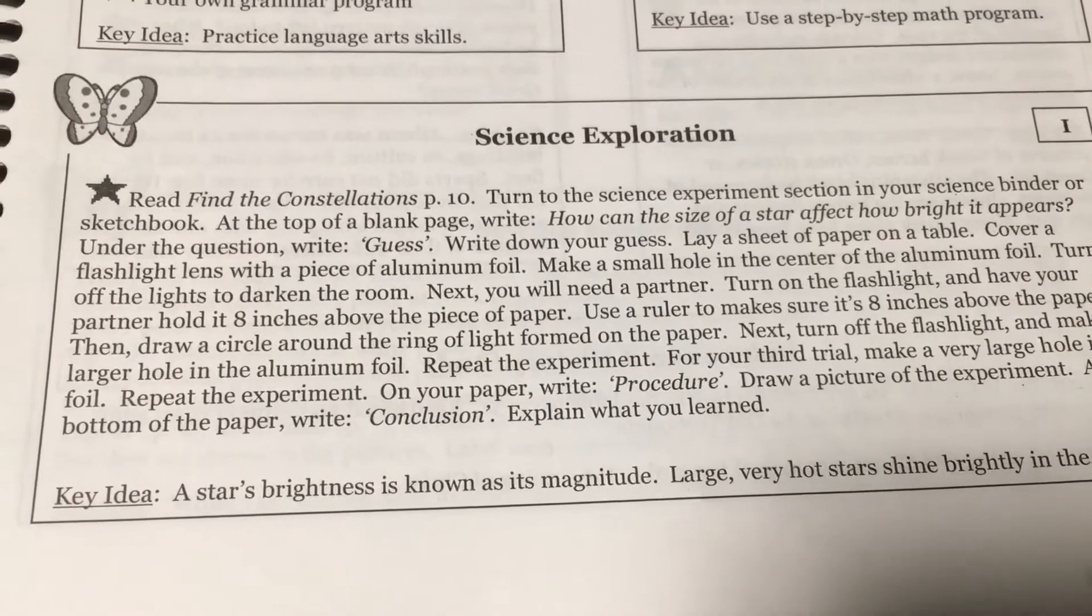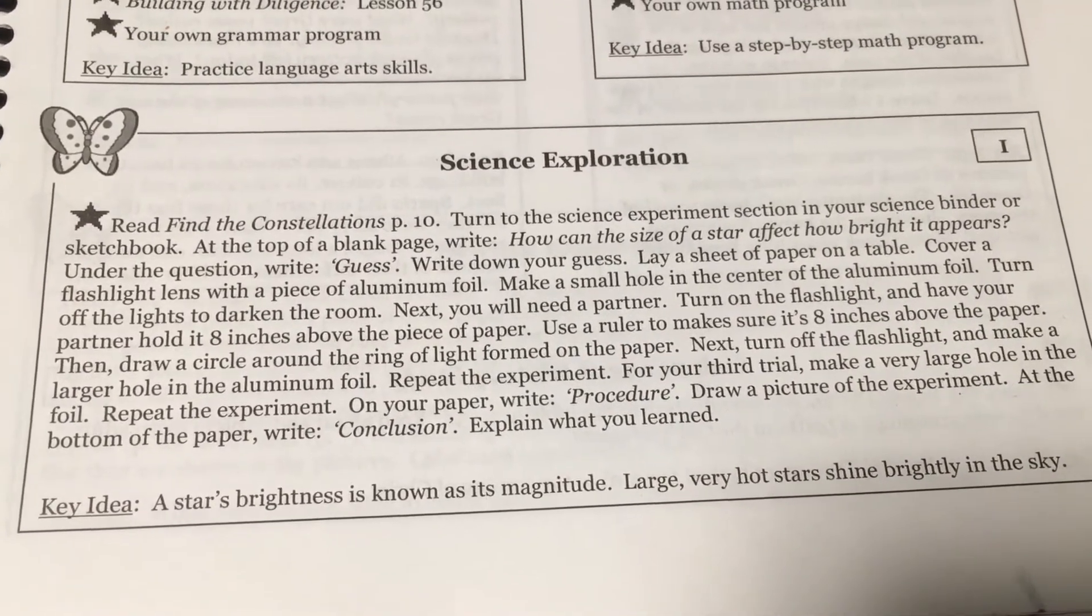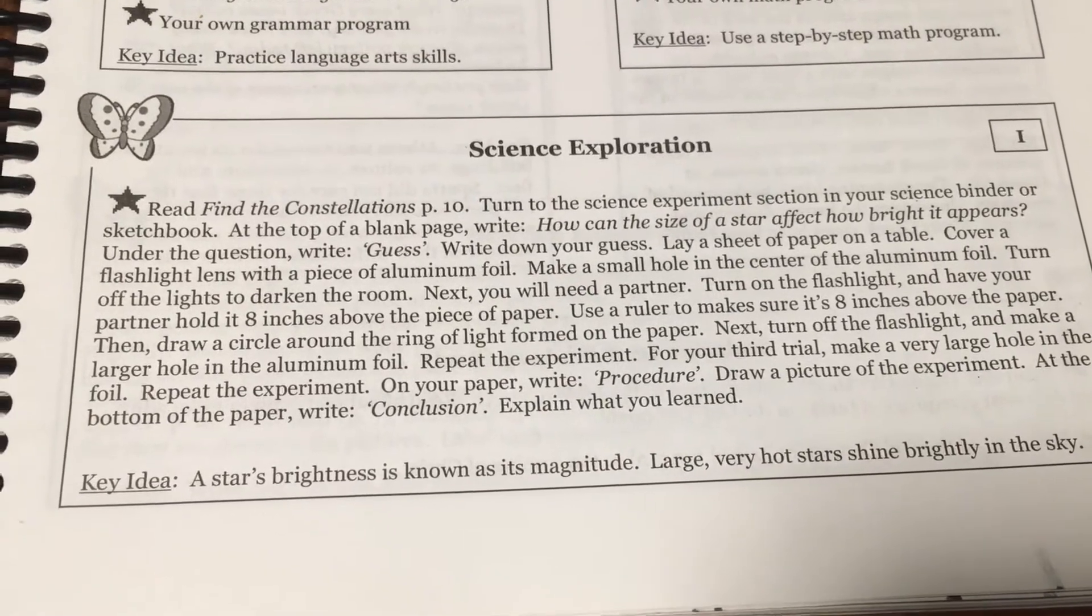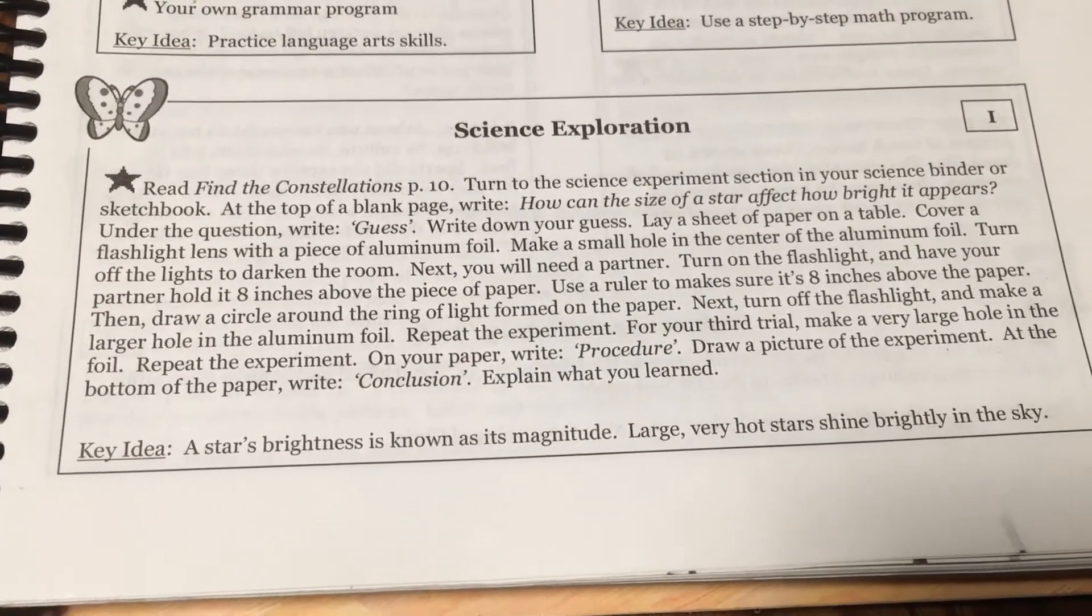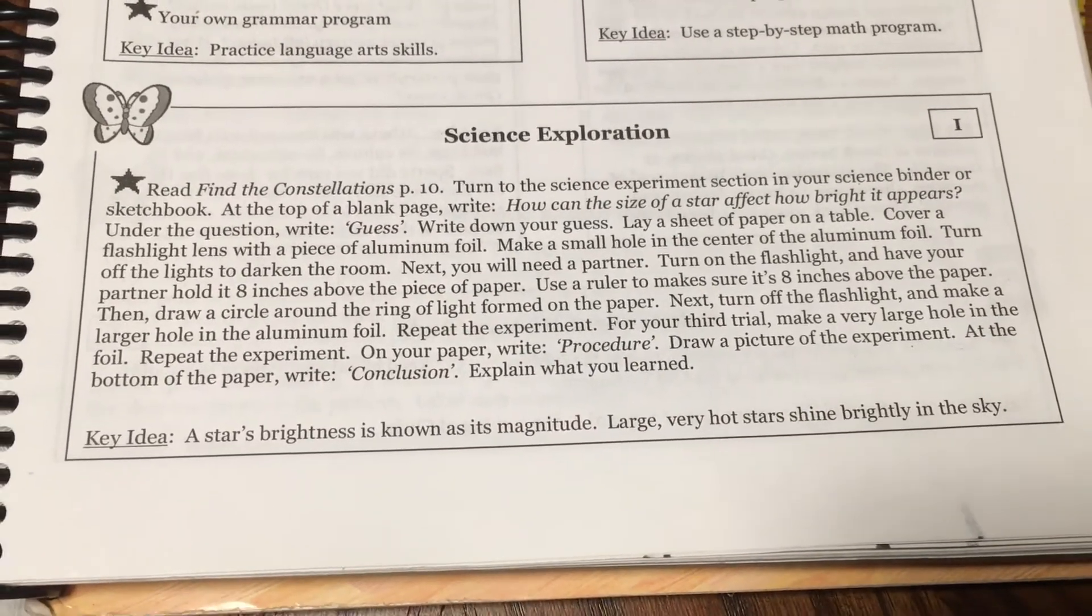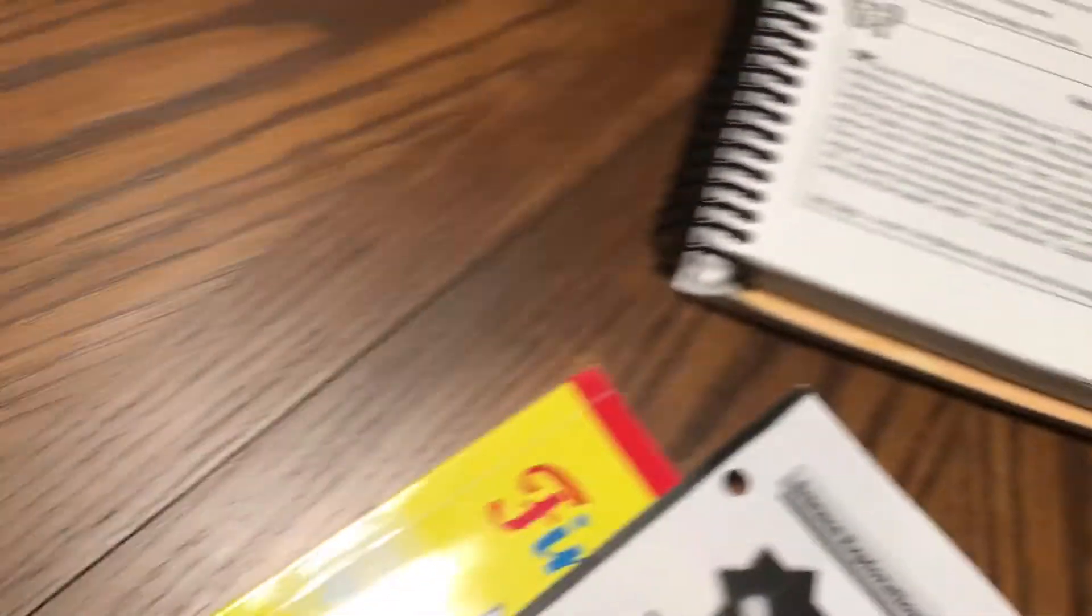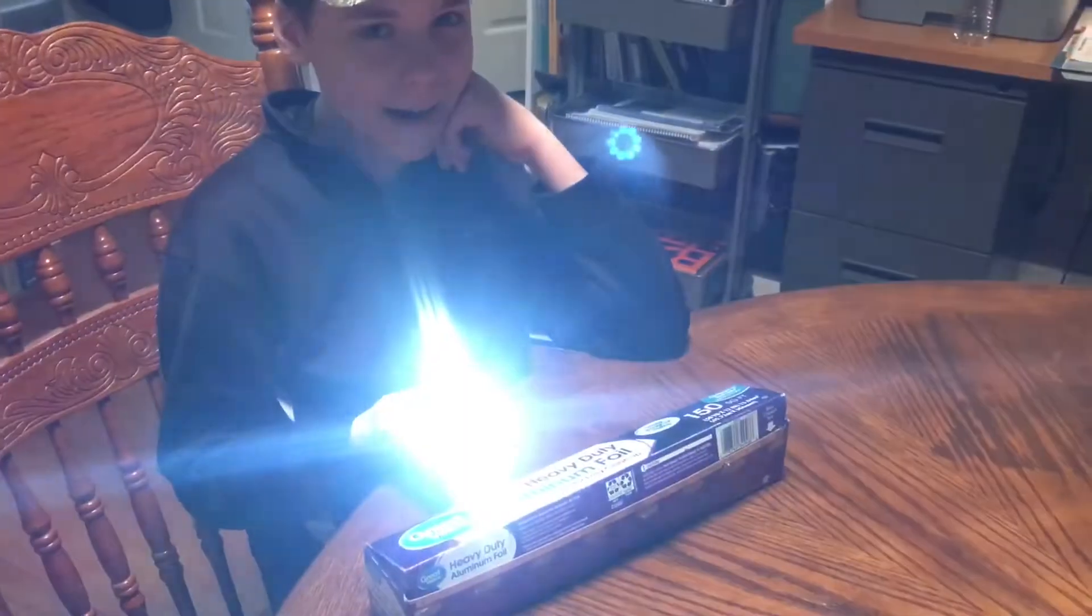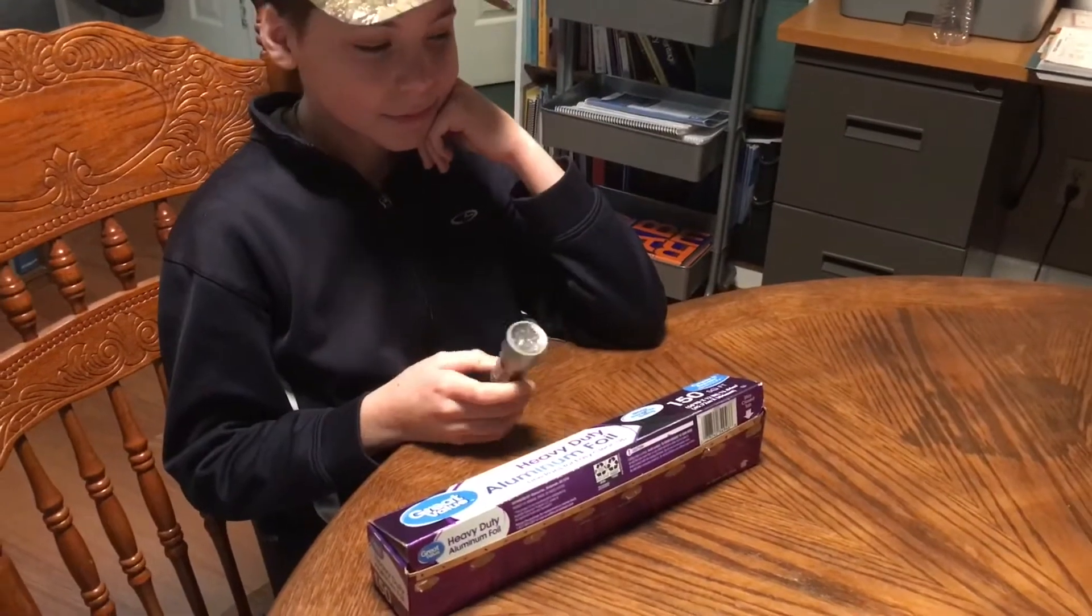So he's done his hypothesis. Now we have to get out what we need. We're going to need a sheet of paper. It says lay a sheet of paper on a table, cover a flashlight lens with a piece of aluminum foil, and make a small hole in the center of the aluminum foil. Turn off the lights in a dark room. So what will we need? A flashlight and aluminum foil. We also need to get a piece of paper.